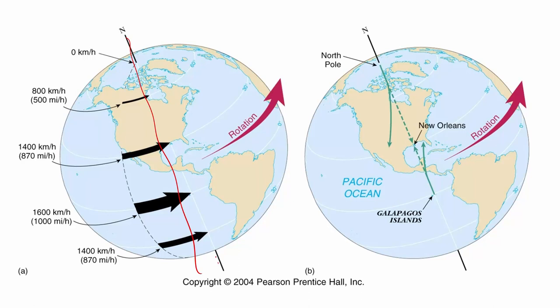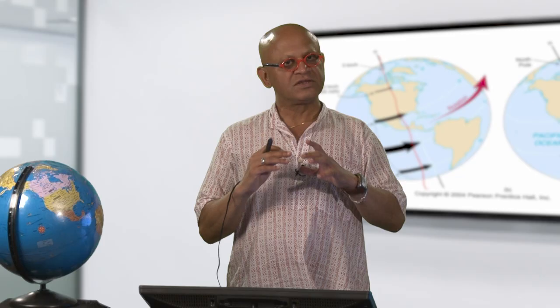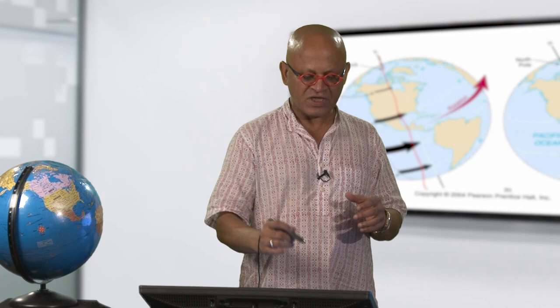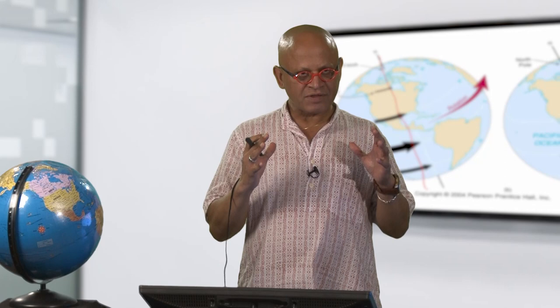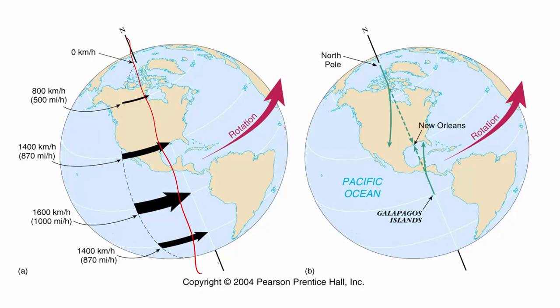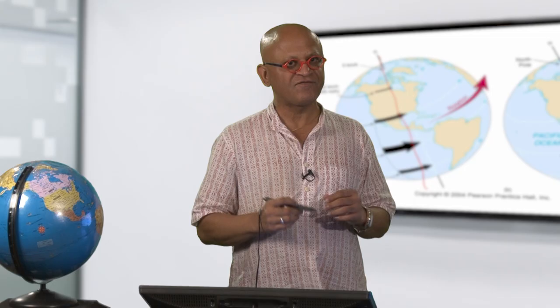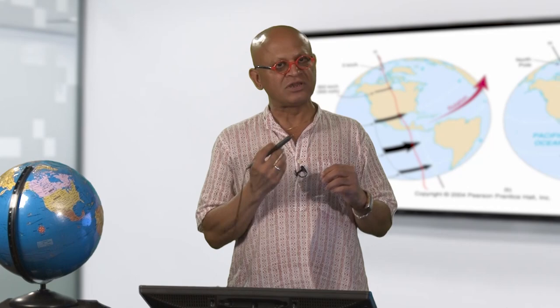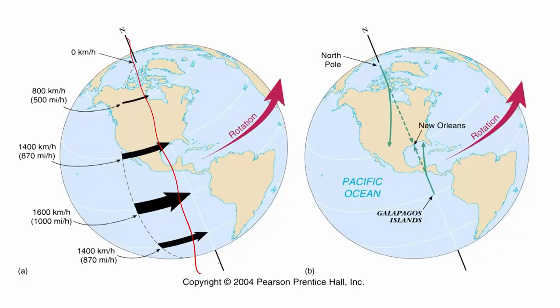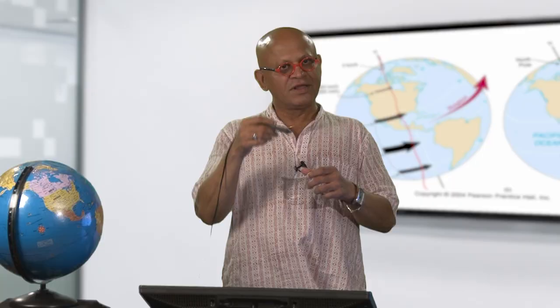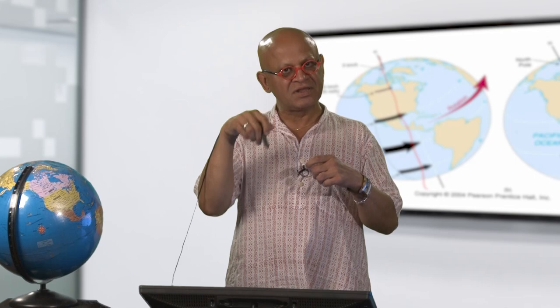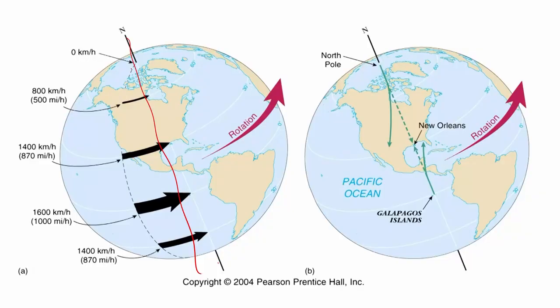Let us look at this figure. We have Earth with an obliquity of 23.5 degrees in the current configuration. Earth is a sphere, which means near the equator the circumference is the largest. As you go away from the equator the circumference becomes smaller and smaller. Since Earth makes one rotation in 24 hours, everybody on the equator is moving much faster because they cover a larger distance. Whereas Santa Claus at the North Pole is making a smaller circle, moving much slower.